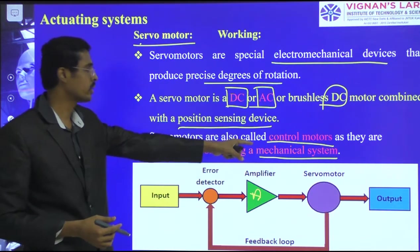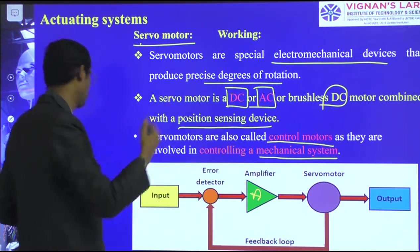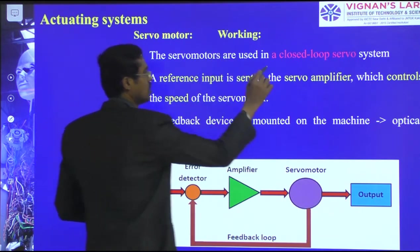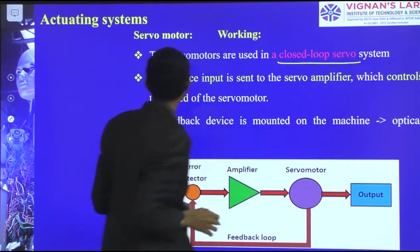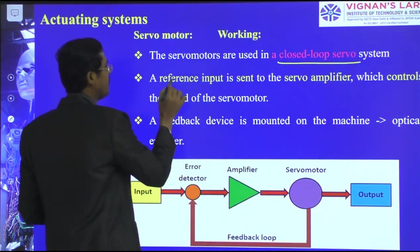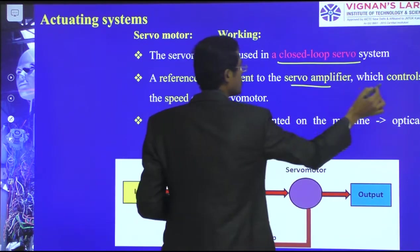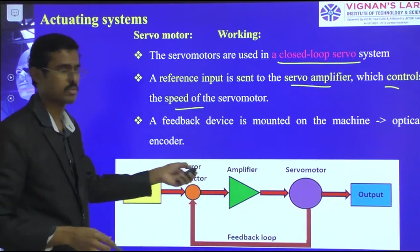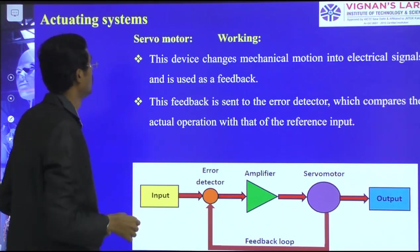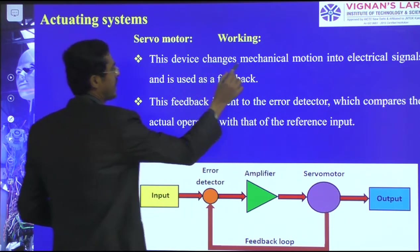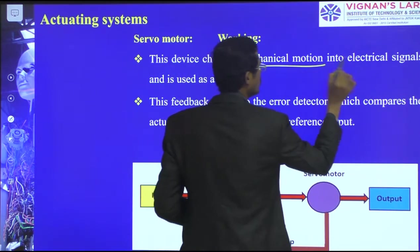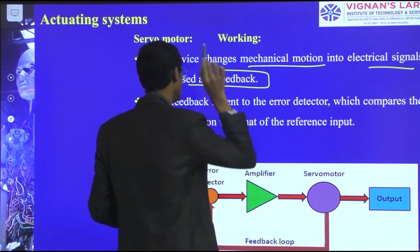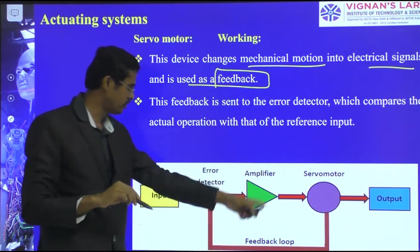Servo motors are used as control motors in a closed-loop system. A reference input is sent to the servo amplifier which controls the speed. The device changes mechanical motion into electrical signals used as feedback, and that feedback gives the control action.